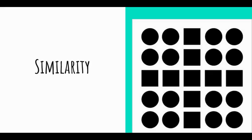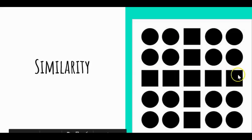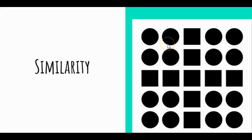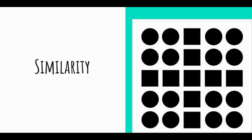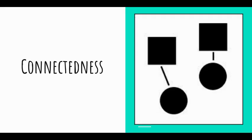Another gestalt principle is similarity. When looking at items, we tend to see things in groups. Looking at this picture, we tend to see certain items as one piece and others as another piece — we like to organize things by similarity. So if we have multiple beads laid out, we like to separate and see them by similar pieces, grouping things that are alike together.